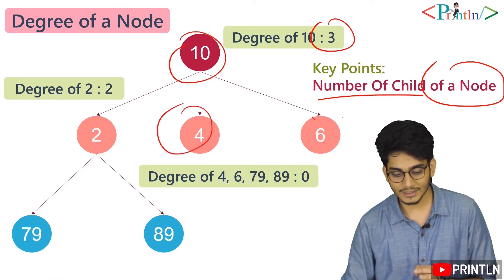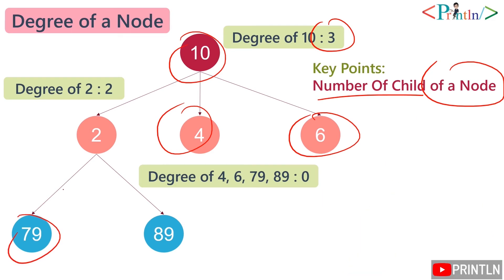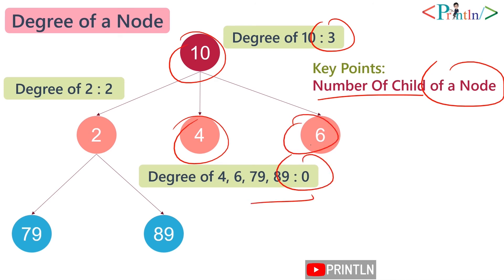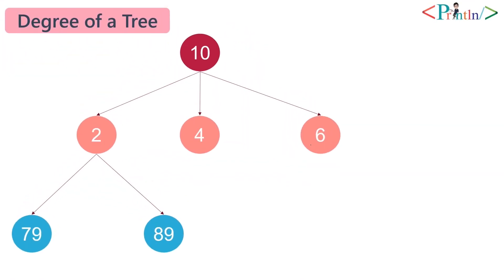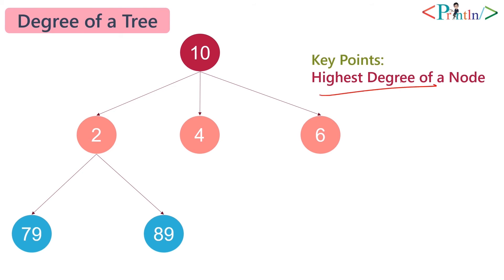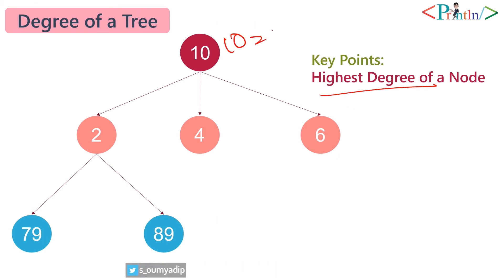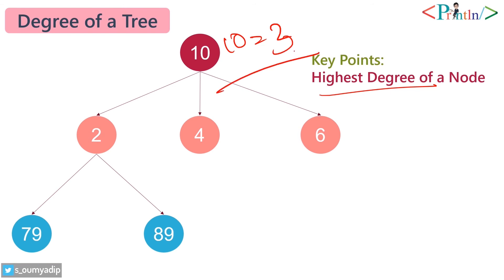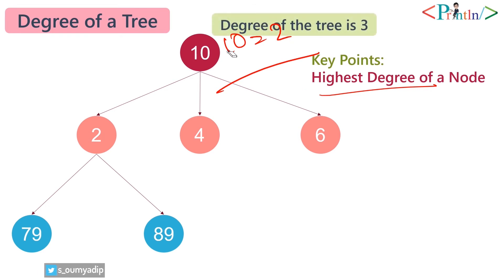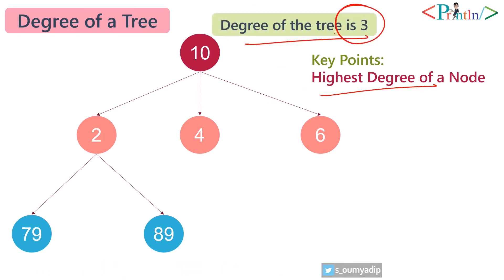The degree of a tree is the highest degree among all its nodes. In this tree, node 10 has the highest degree, so the degree of this tree is 3.